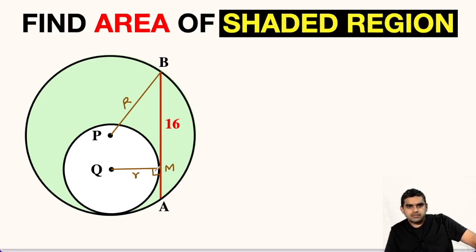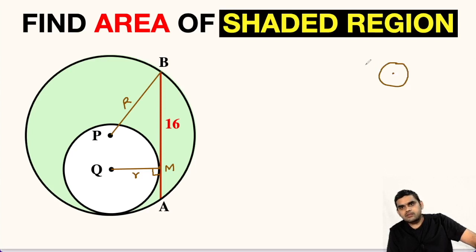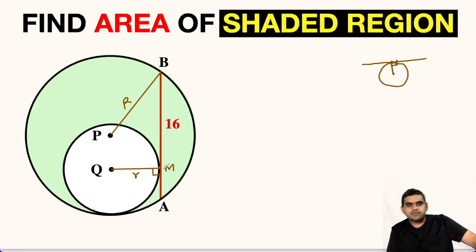The question comes: why will this angle be 90 degrees? We have a theorem that if we have a circle, this is the center point of the circle, and if this is any tangent, this is the point of contact. So if you join the point of contact and the center of the circle, the angle formed is 90 degrees. So here this will be 90 degrees.